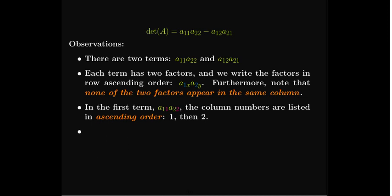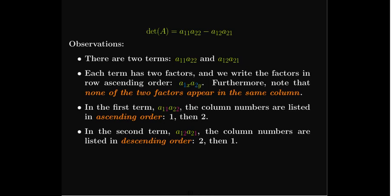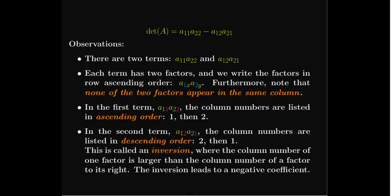It is the inversion that leads to a negative coefficient. Every time you have an inversion, the sign flips — from plus to minus or minus to plus. It always starts with a plus, and since there's one inversion in the second term, that's why we get a minus. We'll see this in more detail when we look at the 3×3 determinant.